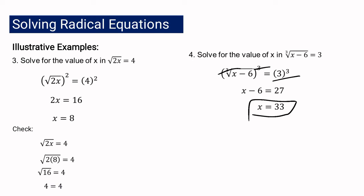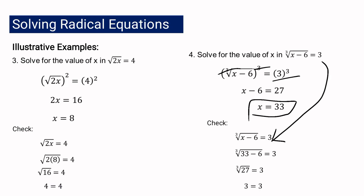Let us check if x equals 33 is correct. Substituting into the original equation: 33 minus 6 equals 27, and the cube root of 27 is 3. So 3 equals 3 — we are correct, and x equals 33 is confirmed.